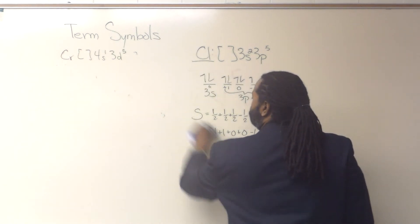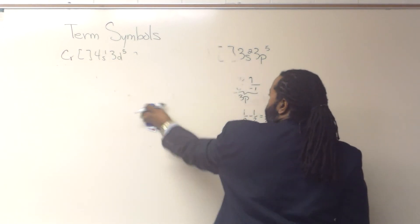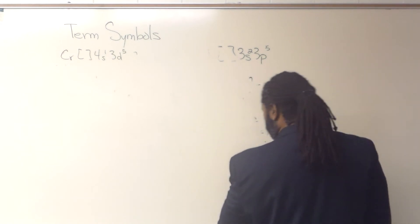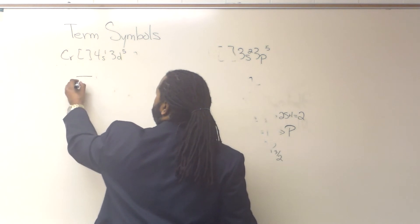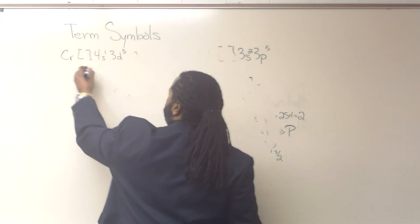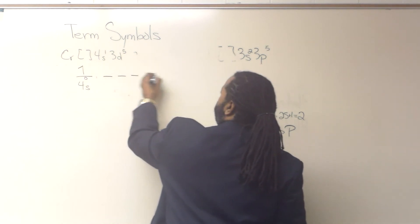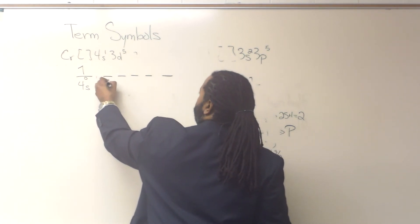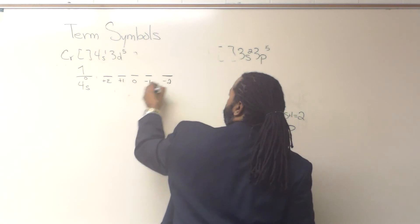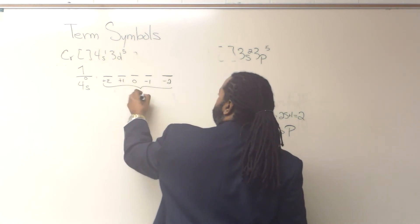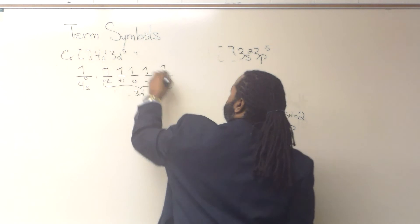May need a little more room. So we do the same thing as before. We're going to write out the orbital diagram. 4S1, 2, 3, 4, 5, starting with plus 2, going all the way down to minus 2 for our 3D. And there are 5 electrons in there as well.